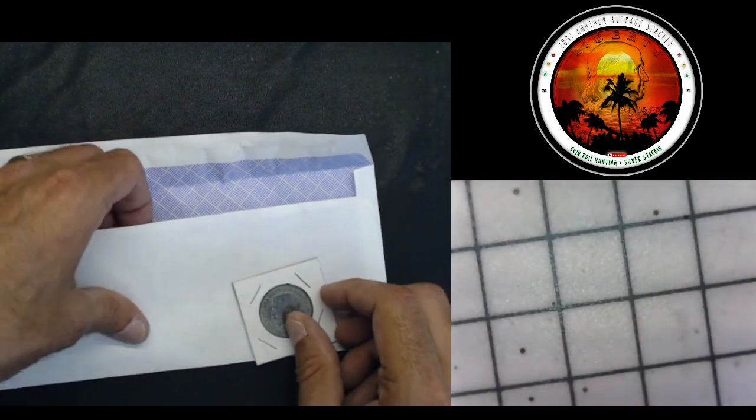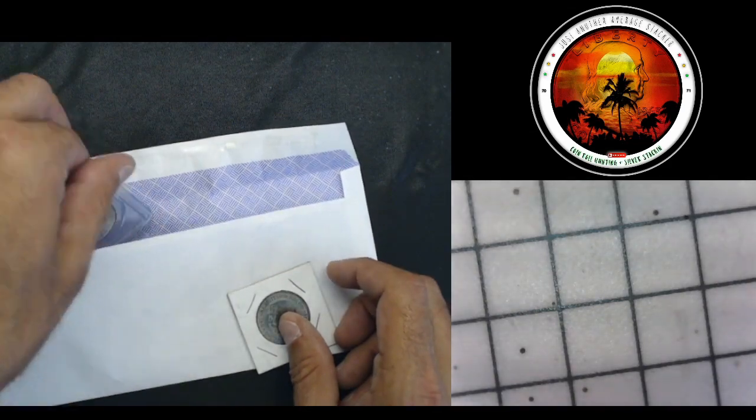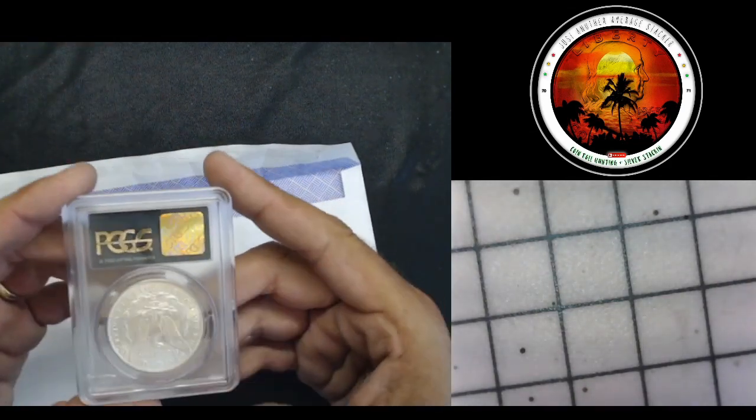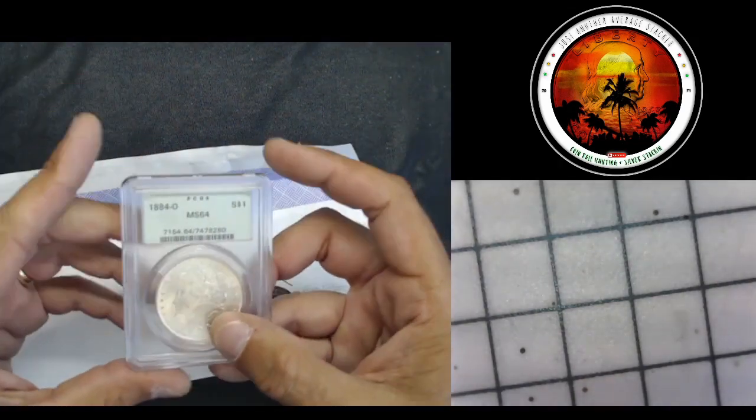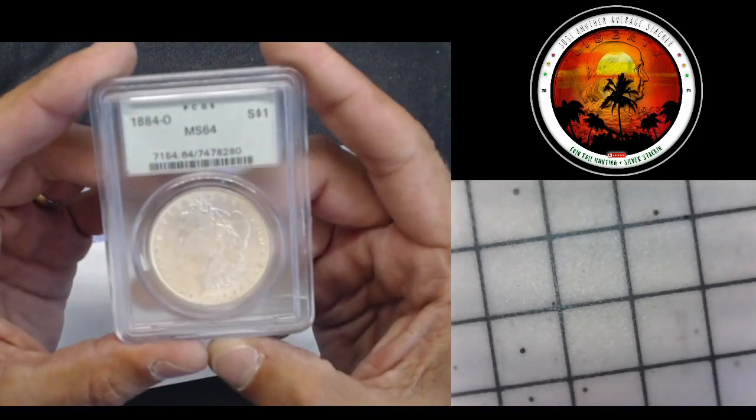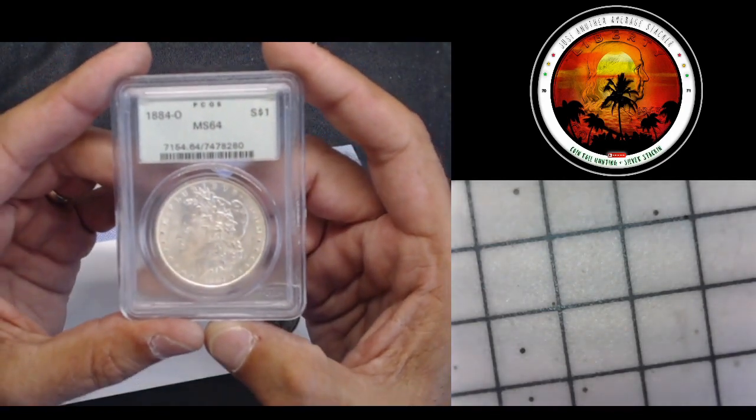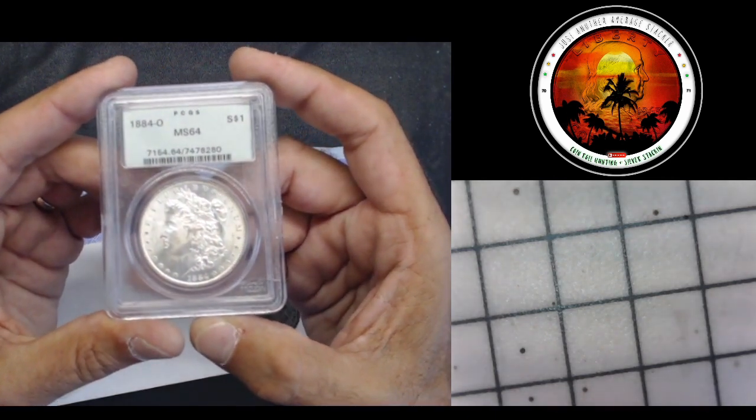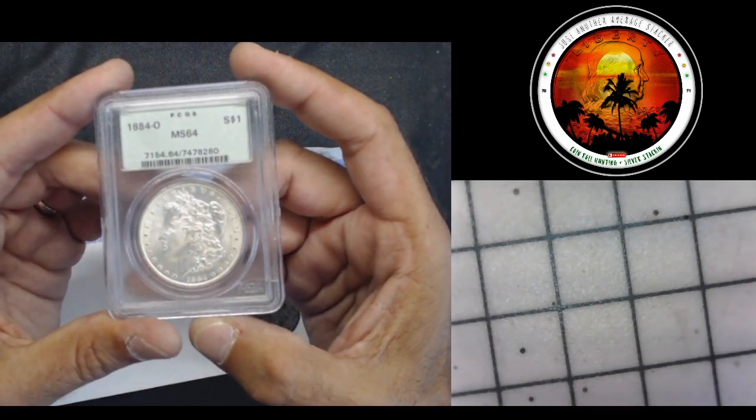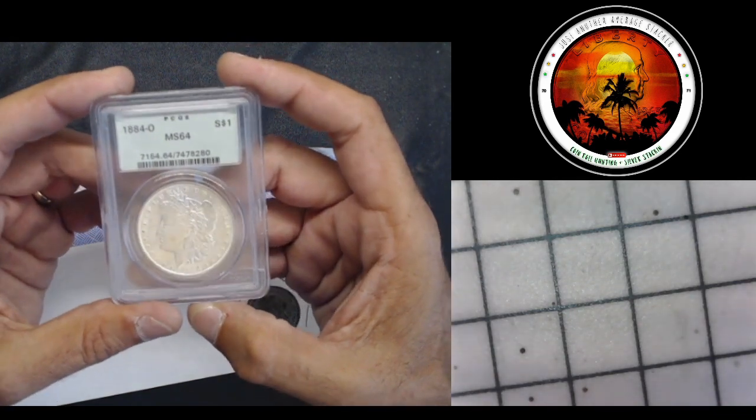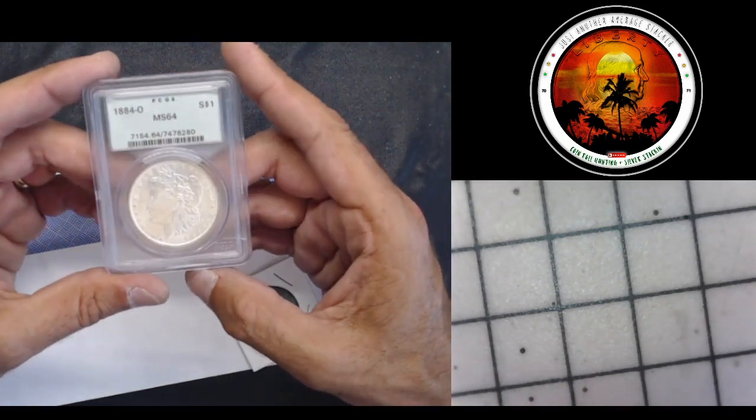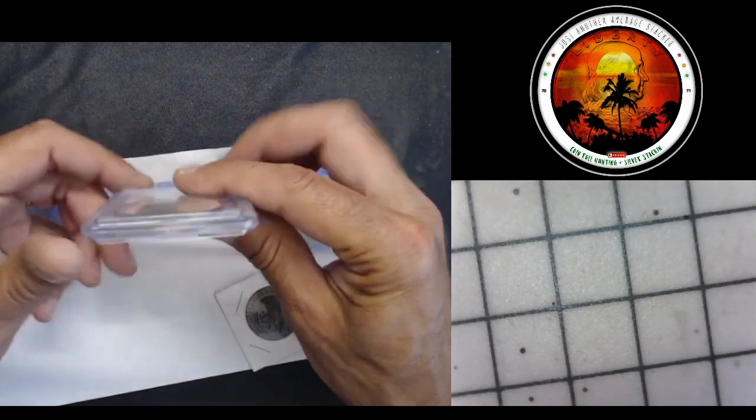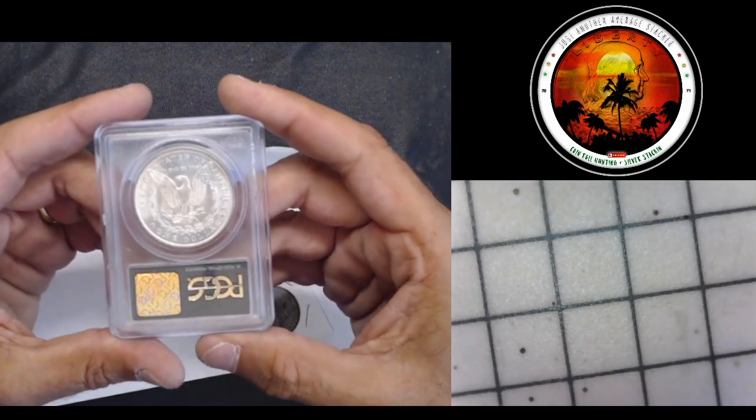In addition to that, we have this beautiful 1884 O MS64 Morgan dollar in the old Green Rattler PCGS case. Absolutely beautiful coin.